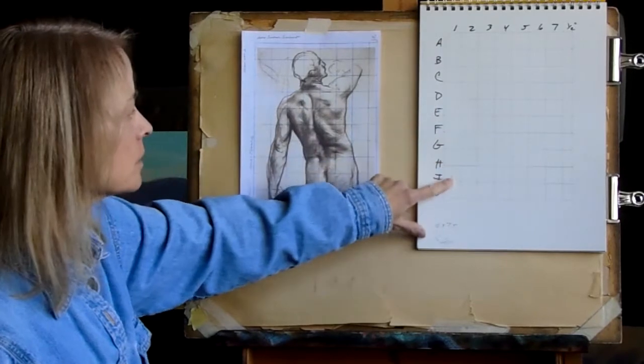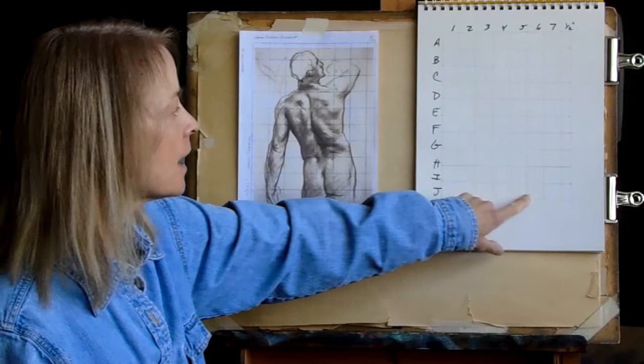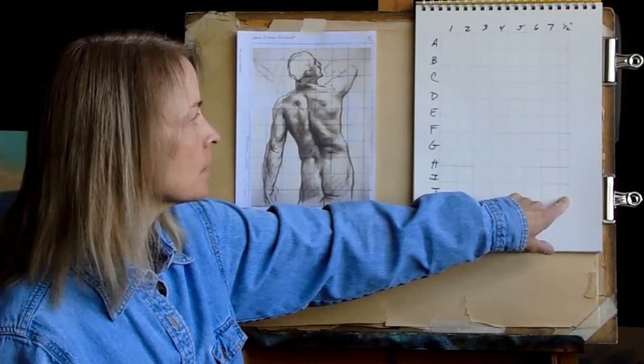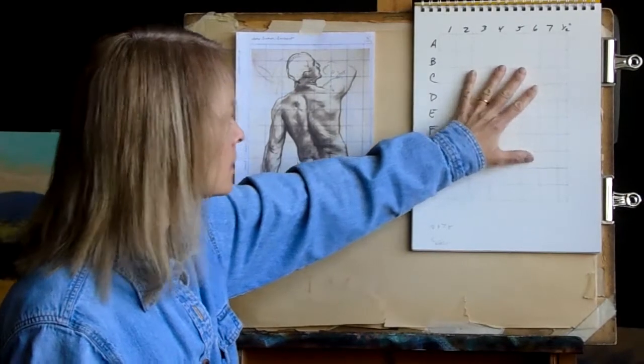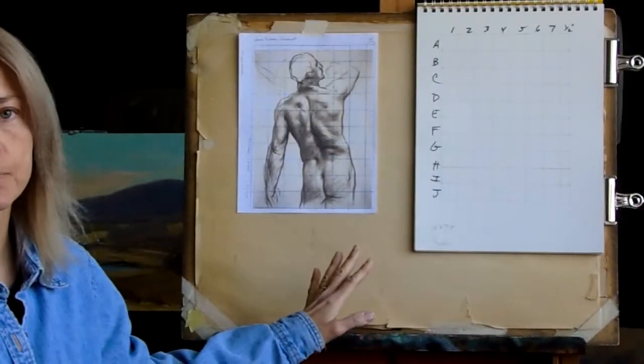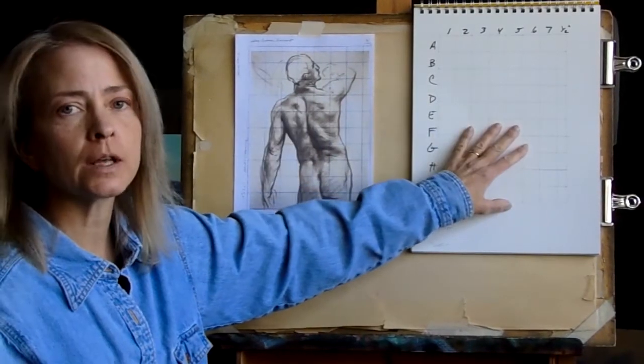I have ten squares going down vertically and seven and a half squares going horizontally. This grid and this grid are exactly the same. So the scale is one inch to one inch.